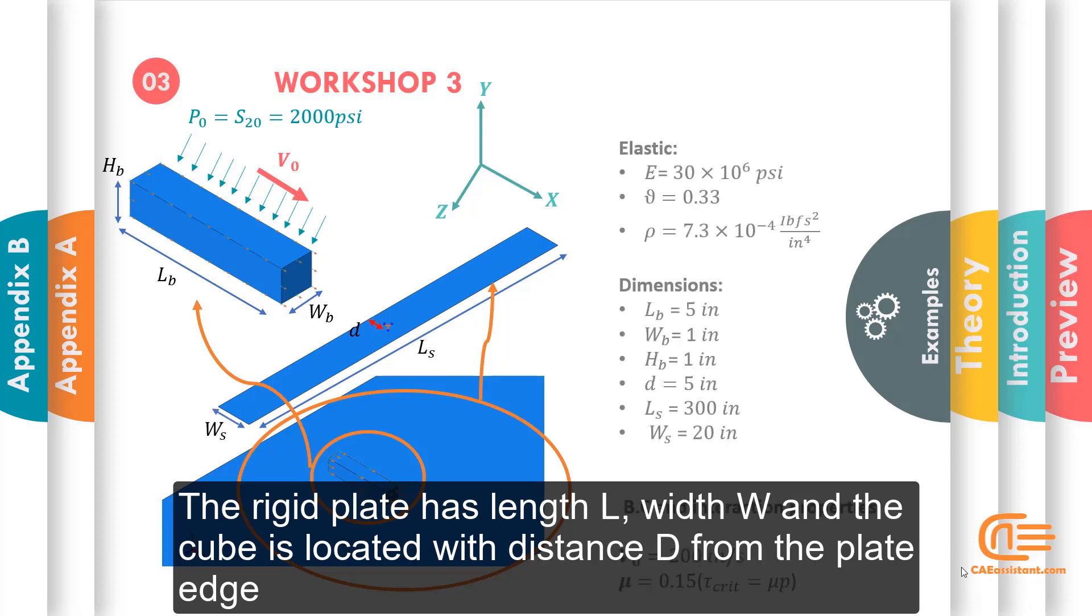The rigid plate has length L and width W, and the cube is located with distance D from the plate edge.